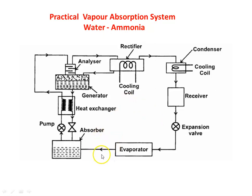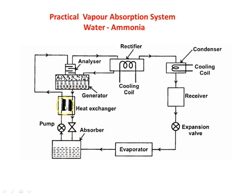Once again, we start from the outlet of the evaporator, where ammonia vapor is leaving. The ammonia vapor is mixed with water in the absorber, and an ammonia solution is formed. This ammonia solution, with lower temperature and higher concentration of ammonia, goes through the pump to the heat exchanger. In the heat exchanger, it absorbs heat energy from the other fluid — the hot ammonia solution flowing back from the generator toward the absorber.